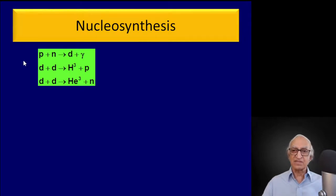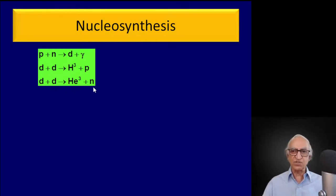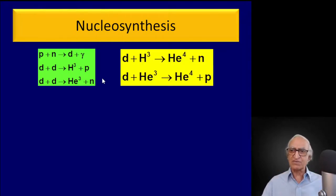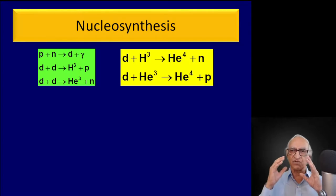According to George Gamow, when the universe was very young, protons and neutrons combined to form deuterium. Then deuterium and deuterium combined to form tritium and helium-3 emitting a neutron. The key thing is that protons and neutrons combined to form deuterium, and then deuterium combines to form tritium and helium-3. Once you have those, a deuterium nucleus can combine with a tritium nucleus to form helium-4, or a deuterium nucleus can combine with helium-3 to form helium-4. This is the basic reaction scheme for nucleosynthesis.